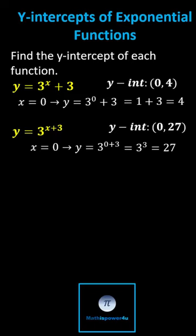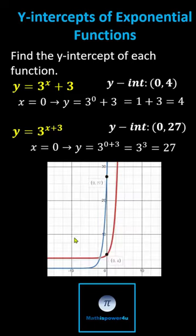And of course, we can verify this by looking at the graphs. The red graph is the graph of the first exponential function. The blue graph is the graph of the second exponential function.